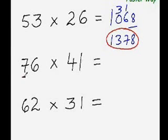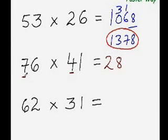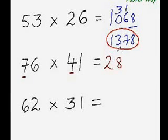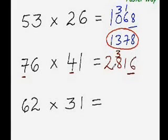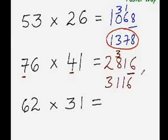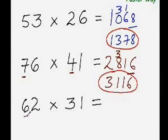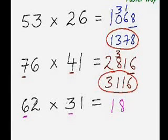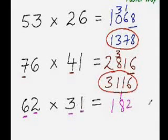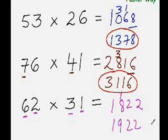Now you try: 76 times 41. Multiply the first digits: 7 times 4 is 28. Then 7 times 1 plus 4 times 6 is 7 plus 24 is 31 — carry 3, so 28 plus 3 is 31. Last digits: 6 times 1 is 6. Answer is 3116. One more: 63 times 21 — 6 times 3 is 18, then 6 times 1 plus 3 times 2 is 6 plus 6 is 12, and 2 times 1 is 2. Answer is 1922.